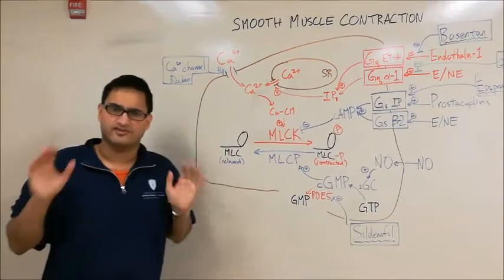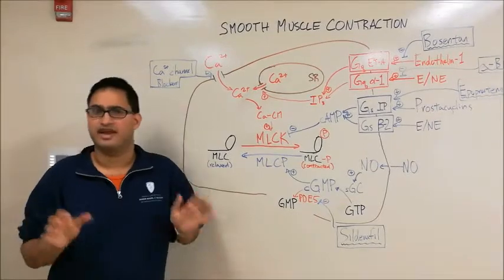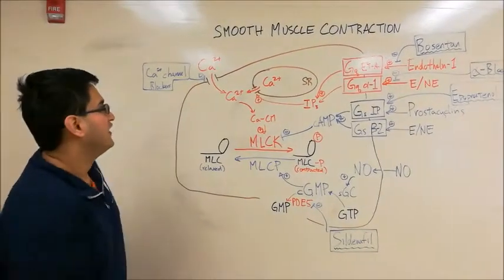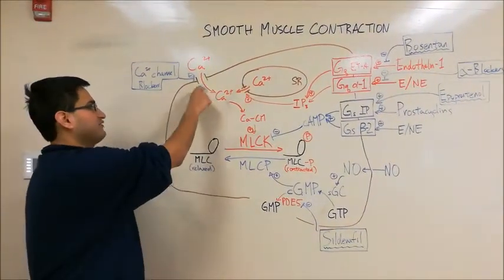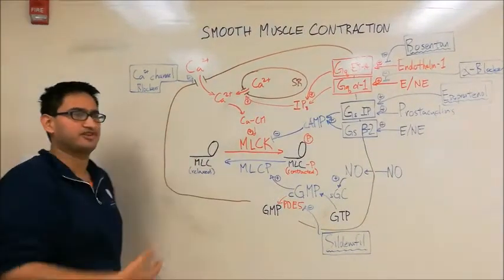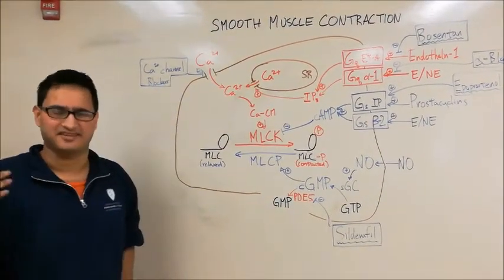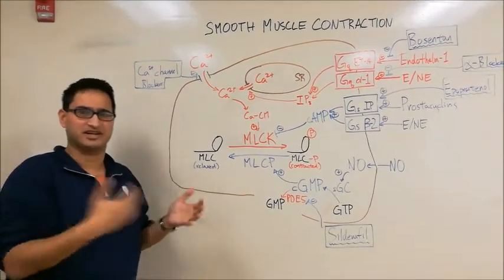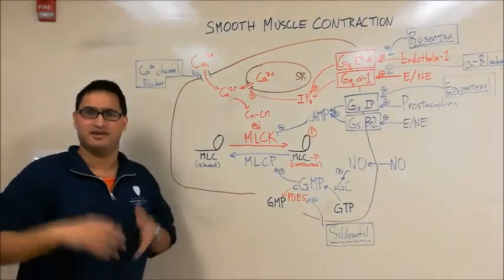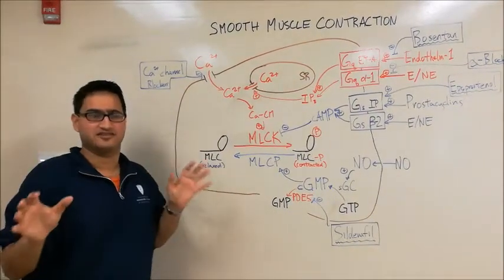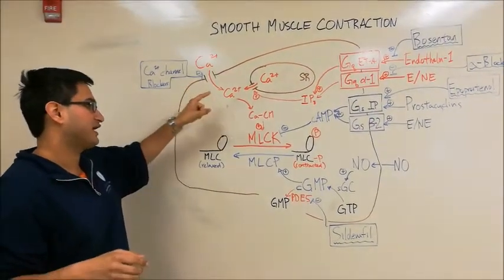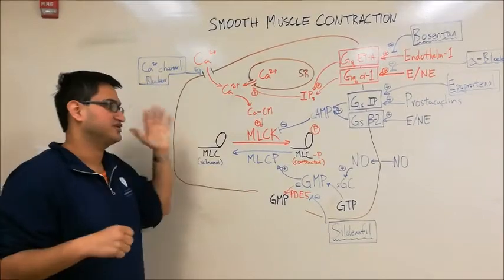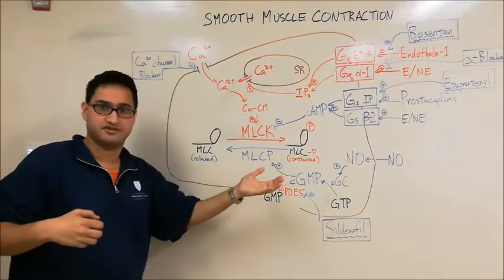Before discussing pharmacology, I want to add a quick point: on the cell membrane there are L-type calcium channels that let calcium into the cell. There are a variety of stimuli that might open and close these, but they allow calcium to bind to calmodulin and promote muscle contraction and vasoconstriction.